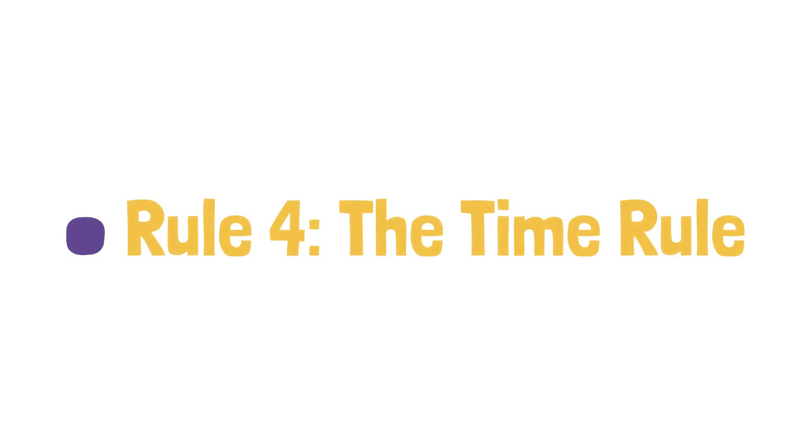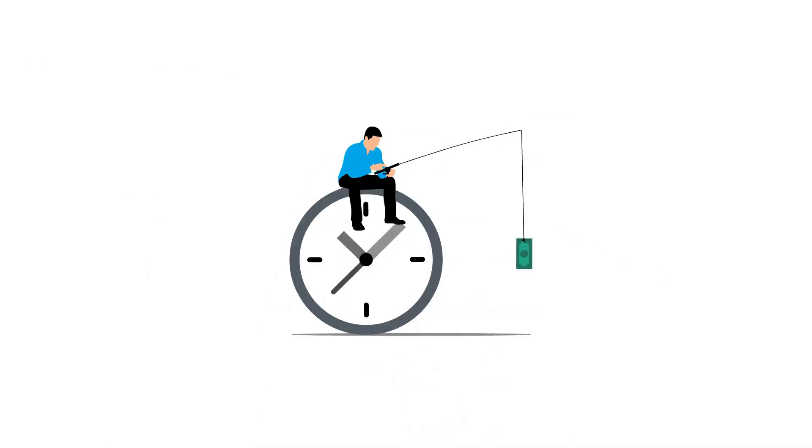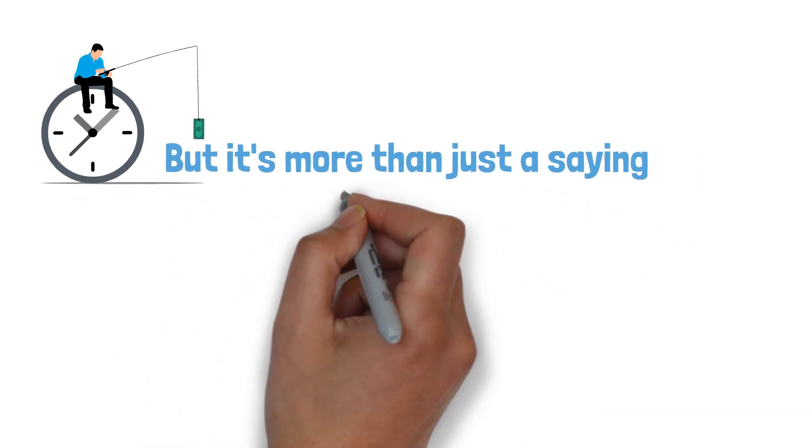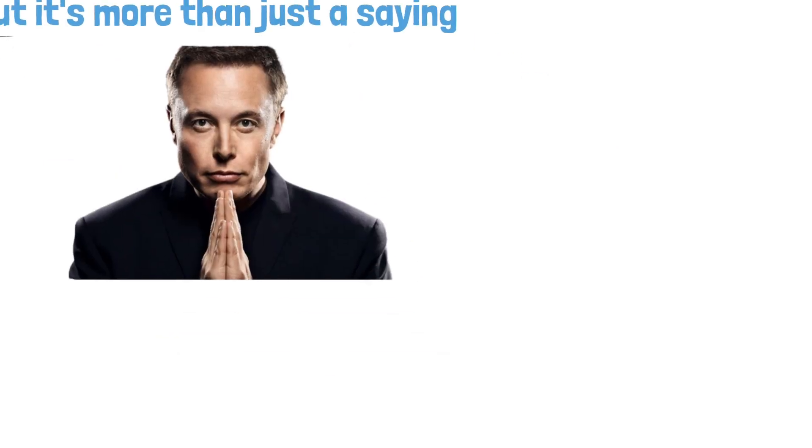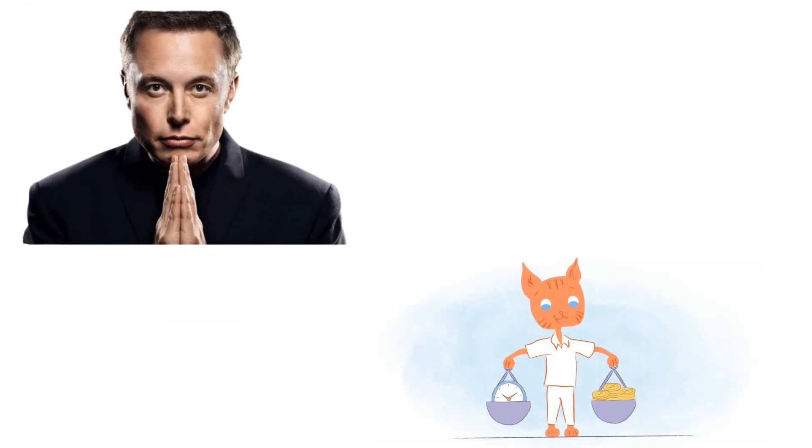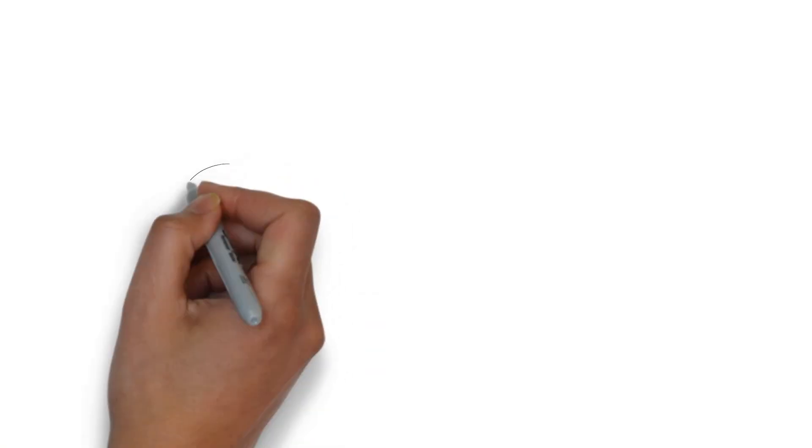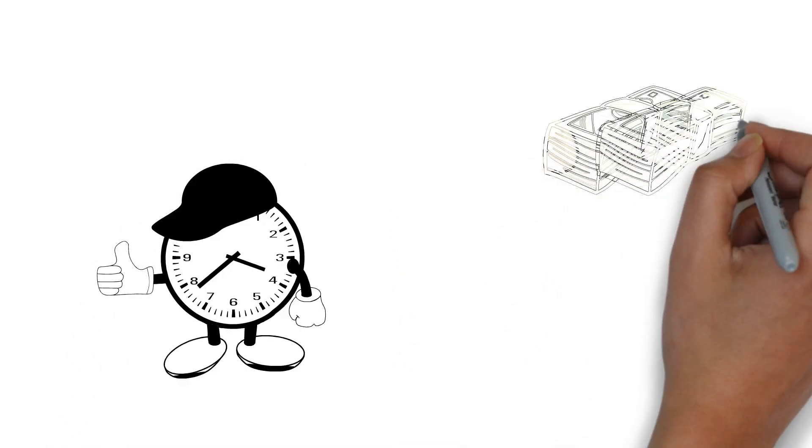Rule number four, the Time Rule. Time, as they say, is money. But it's more than just a saying. It's a fundamental principle the wealthy understands. They know that time is our most valuable asset because it's non-renewable. Once it's gone, it's gone forever. You're making a terrible mistake if you stay out of a game that you think is going to be very good over time, because you think you can pick a better time to enter it.